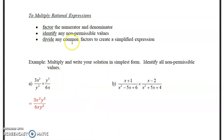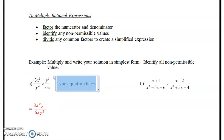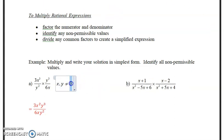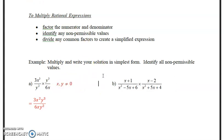First step is factor, but we didn't need to factor. Identify the non-permissible values. You can do that now or later. This one here is pretty easy. I'll do it now. It's just simply x and y can't be 0, as you guys notice, right? So I'll put that in now. x, comma, y cannot equal 0.